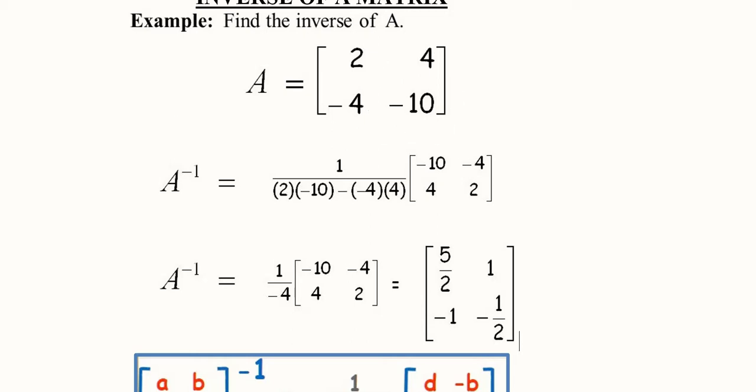In this principal diagonal what we will do is that we will change their places. So here minus 10 and 2 are appearing instead of 2 and minus 10.